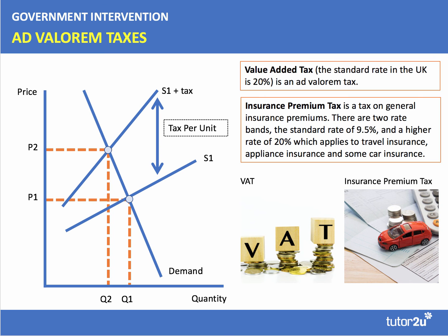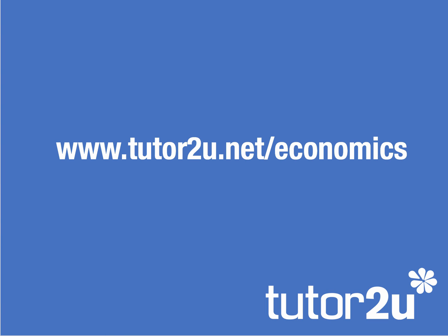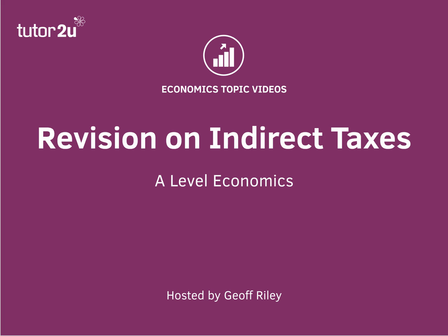This causes the supply curve to pivot — the amount of the tax is greater at higher prices, so there is a pivotal upward shift in the supply curve. VAT is a good example. Another one in the UK is insurance premium tax, banded at two rates — 9.5% and 20% — applying to things like travel insurance, appliance insurance for washing machines or dishwashers, and some forms of car insurance. Lots more revision notes and quizzes on indirect taxes are available on our website at tutor2u.net/economics. Thanks for joining this revision video on indirect taxes.